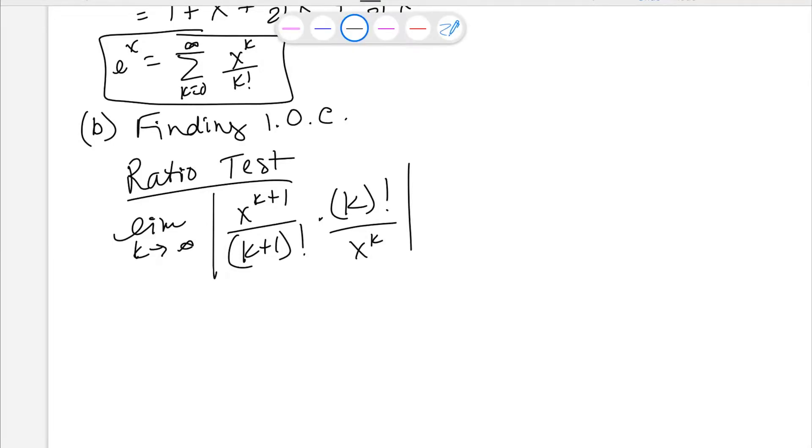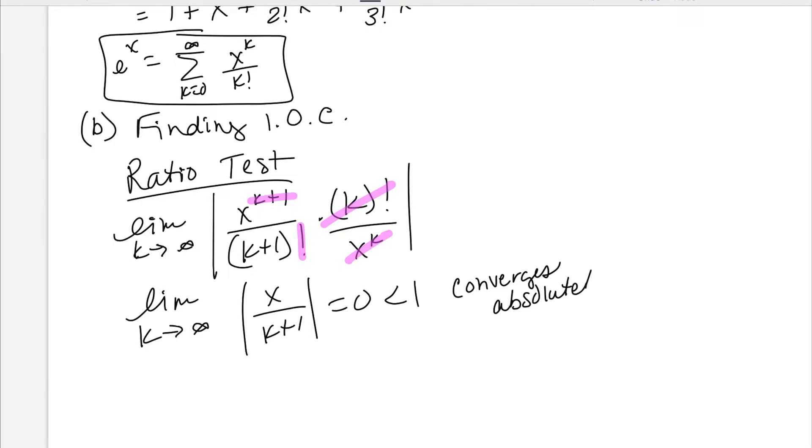Would it wig you out if I shortcutted like we talked about last time, where this x to the k takes out that, and then this x to the k takes out that exponent? Because you can break them up, but that's what you're going to always end up with. So I'm really looking at the limit as k approaches infinity of x over k plus one. When k approaches infinity, this whole thing goes to zero. Because zero is less than one, I know this converges absolutely.